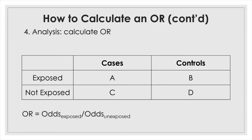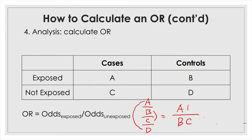The odds ratio is the ratio between these two odds: the odds of having the disease when exposed over the odds of having the disease when not exposed. So it's A over B divided by C over D. Multiplying these out, you get A times D in the numerator and B times C in the denominator. So the odds ratio is AD over BC.